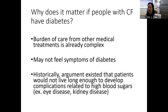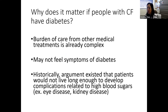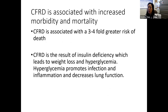Why does it matter if people with CF have diabetes? The burden of care from other medical treatments of CF is already really complex. At the onset and diagnosis of diabetes, many people may not feel symptoms. And historically, the argument existed that people with CF might not live long enough to develop complications from high blood sugars, such as eye disease and kidney disease. But a lot of research over the last couple decades has highlighted the importance of CF-related diabetes for CF health. CF-related diabetes is associated with increased morbidity and mortality.